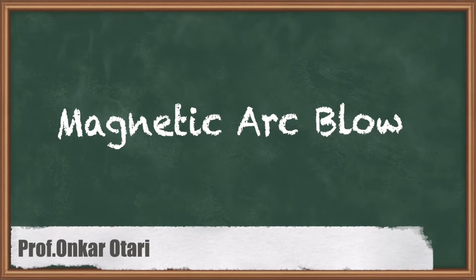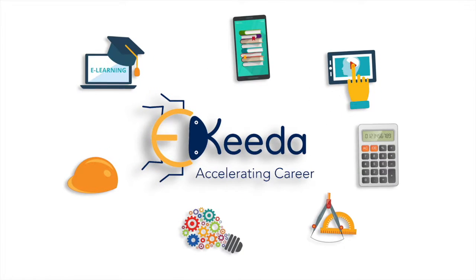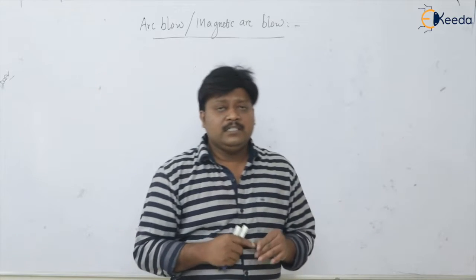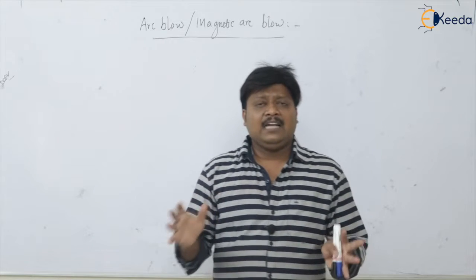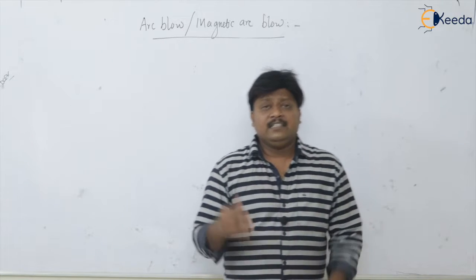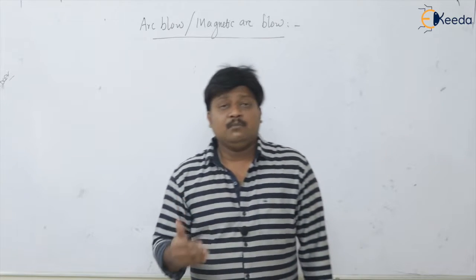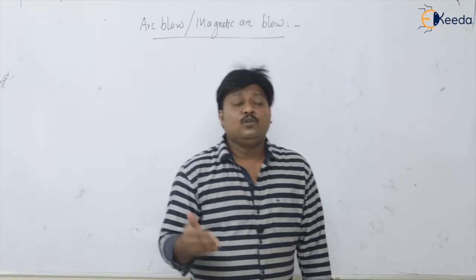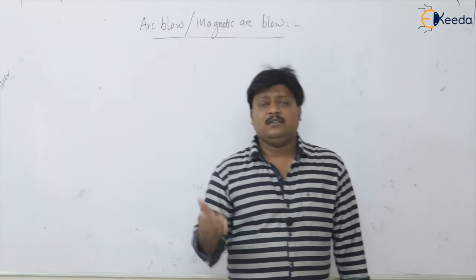Welcome students. In this video we are going to talk about arc blow, also known as magnetic arc blow. In AC, the arc is more stable so we are not getting this arc blow effect. But more predominantly we are getting this arc blow in case of direct current, DC welding.